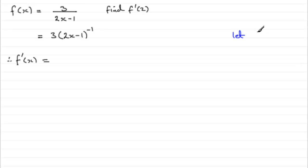You can use any letter you like, but I'm just using t. So t equals 2x minus 1. Then, the chain rule is,